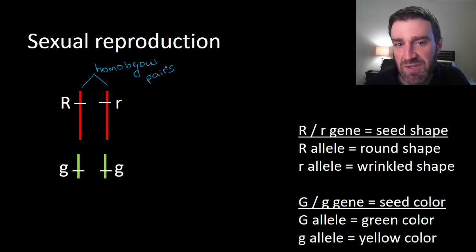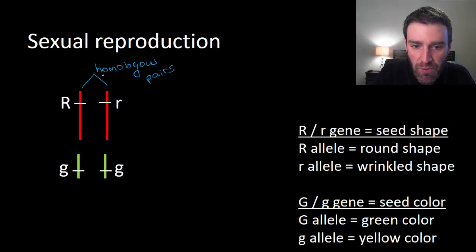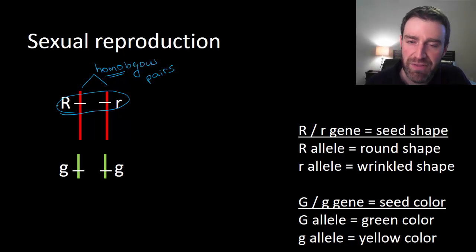We call these pairs of chromosomes homologous chromosome pairs. The homo root word means same, and so what we're trying to say is that these pairs carry the same genes in the same location. So both of these chromosomes for this species carry the R gene, which may be generally codes for what shape a seed might be in this species.